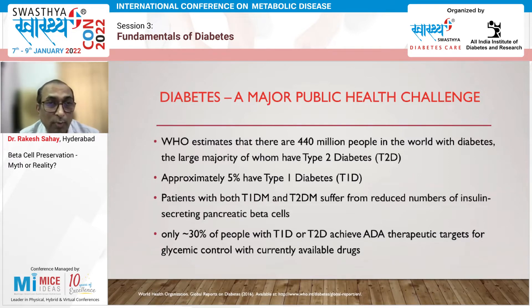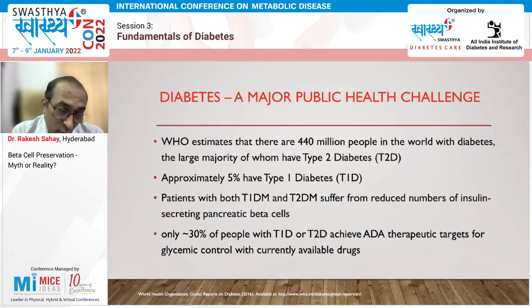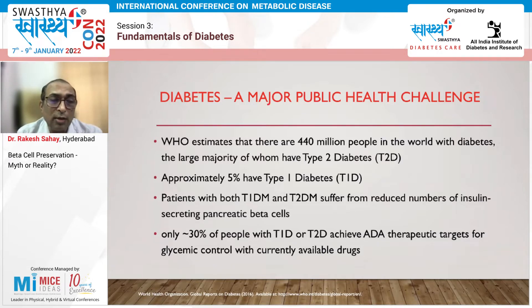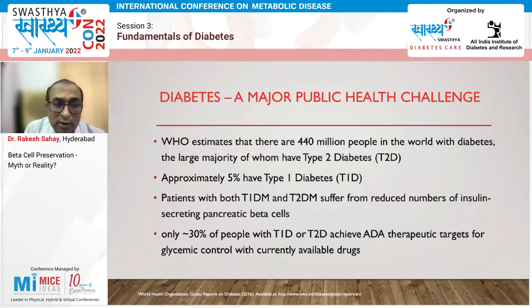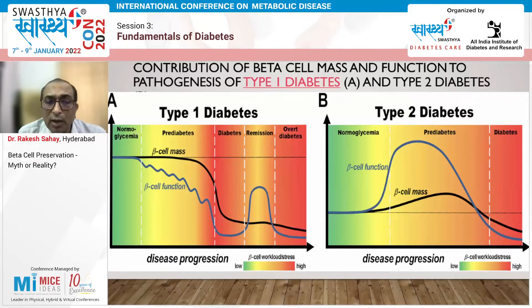In people with type 2 diabetes, there is also a relative beta cell dysfunction. Unless they develop beta cell dysfunction, they do not develop diabetes. The available therapeutic agents and lifestyle changes are able to get only about 30% — almost one third — of our patients to reach their targets. There is need to look beyond this.